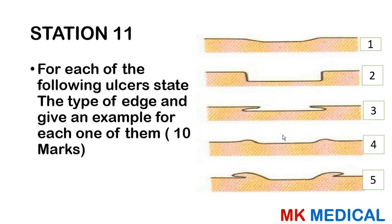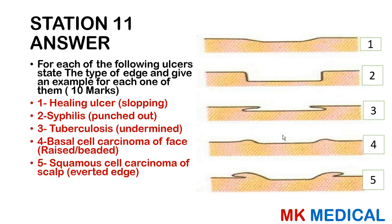Station 11 — a giveaway: For each of the following ulcer types, state the edge type and give an example. Sloping edge — seen in a healing ulcer. Punched-out edge — seen in syphilis. Undermined edge — seen in tuberculosis. Raised or beaded edge — seen in basal cell carcinoma. Everted edge — seen in squamous cell carcinoma of the scalp.